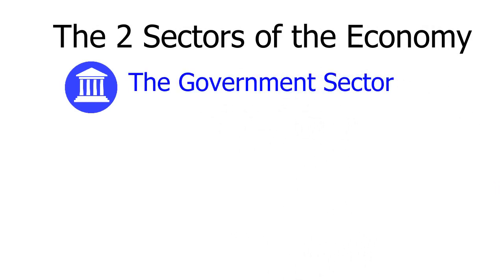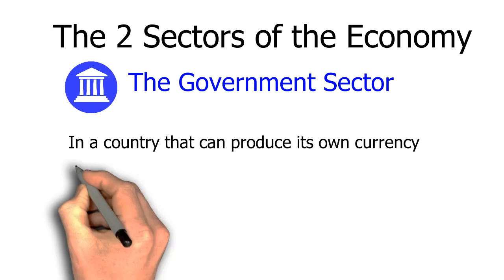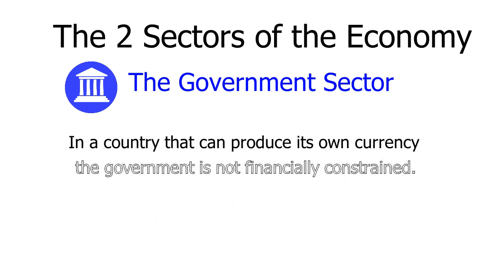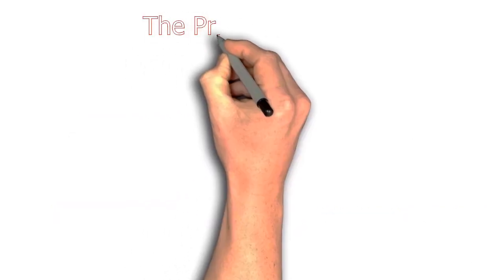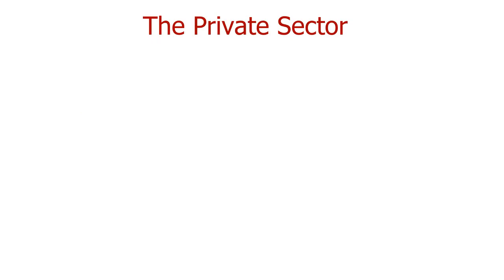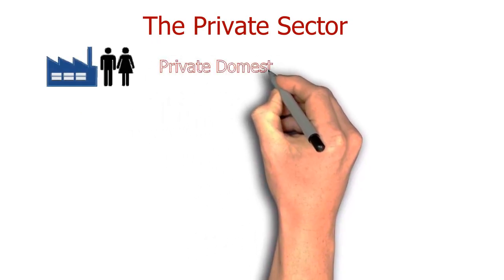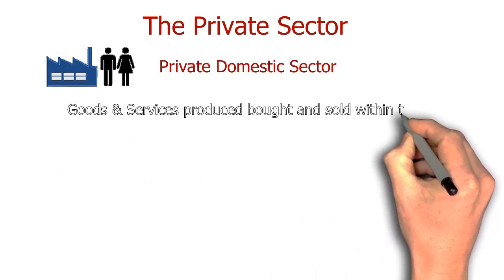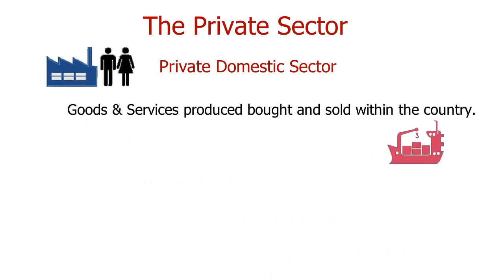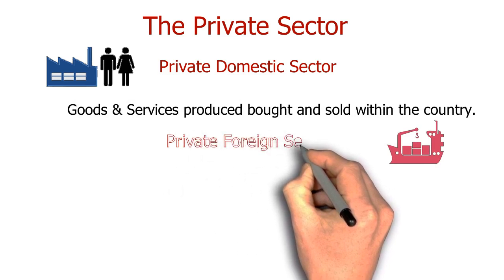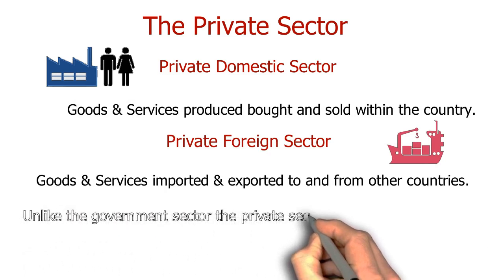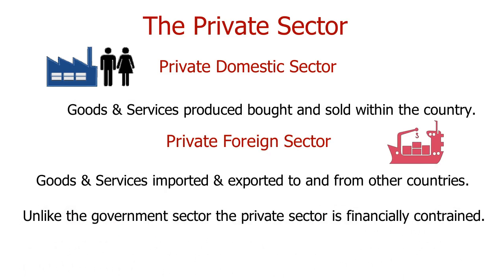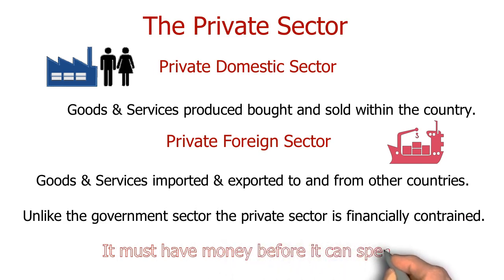The government sector, which in a country that can produce its own sovereign currency is not financially constrained and it does not have to collect money before it can spend. And the private sector, of which there are two parts: the private domestic sector of firms and individuals consuming locally produced goods and services bought and sold within the country, and the private foreign sector, which exports and imports goods and services to and from other countries. Unlike the government sector, the private sector is financially constrained.